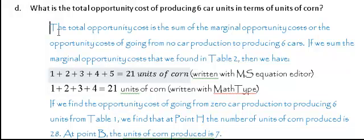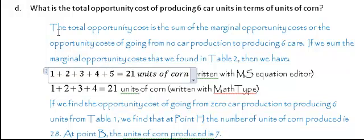The total opportunity cost is the sum of the marginal opportunity costs of going from no car production to producing six cars. If we sum the marginal opportunity costs that we found in Table 2, then we have: 1 + 2 + 3 + 4 = 21 units of corn.